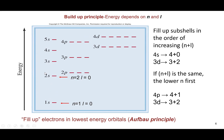To simplify determining orbital filling order, place electrons in orbitals in order of increasing n+L value. For example, 4s has n=4 and L=0, giving a sum of 4; while 3d has n=3 and L=2, giving a sum of 5. So electrons go into 4s before 3d. If the n+L value is the same, go with the lower n first. For example, comparing 4p and 3d — both have a sum of 5 — but 3d goes first because it has the smaller n value.